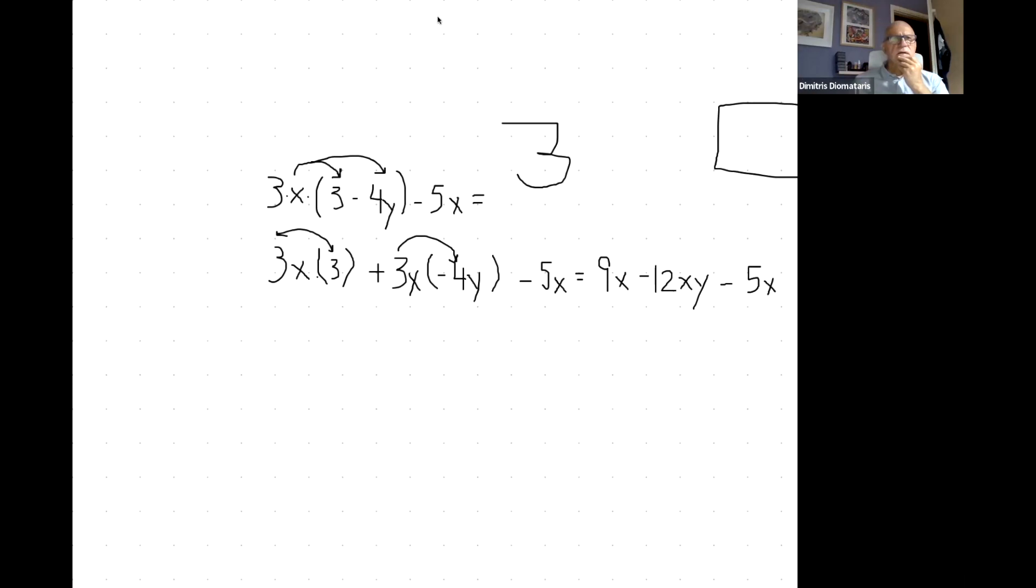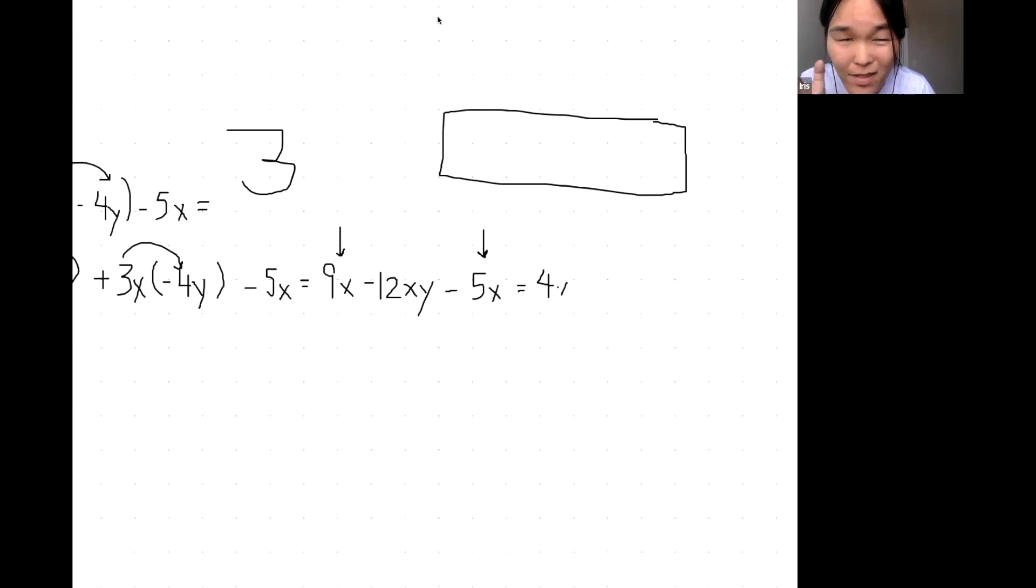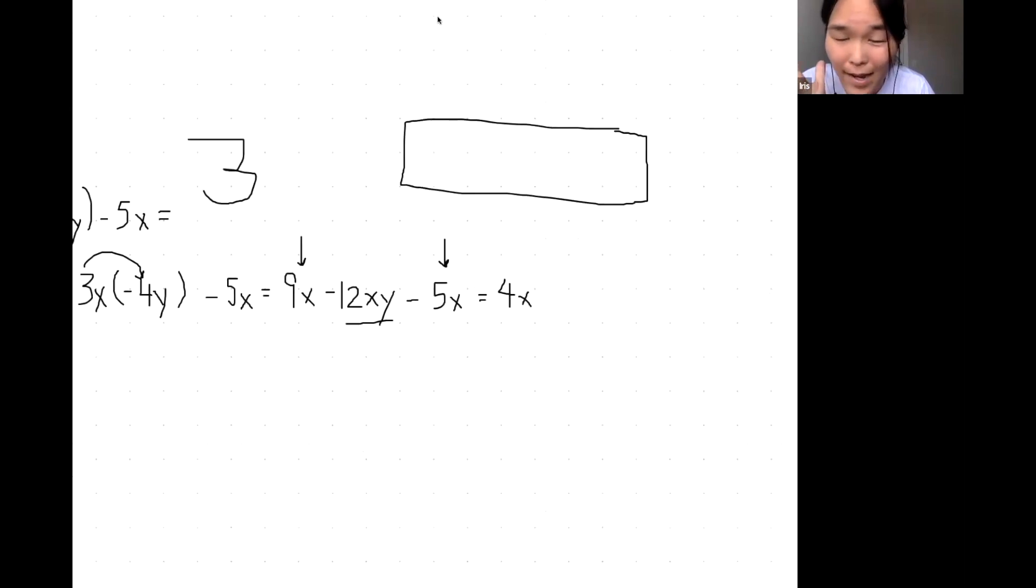So these are like terms because it's a number times just x raised to exponent of one, so I can combine them. So 9x minus 5x becomes 4x. And then this guy I can't do anything because it's a different one because it has a y, so this one becomes 4x minus 12xy.